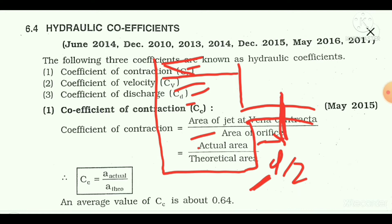At the vena contracta, the jet contracts and the cross-sectional area of the jet is at its minimum. That minimum cross-sectional area of the jet is known as the actual area. Whatever the diameter of the orifice is, if we calculate the area of the orifice it is fixed, because it is already embedded in the tank — so this area is known as the theoretical area.